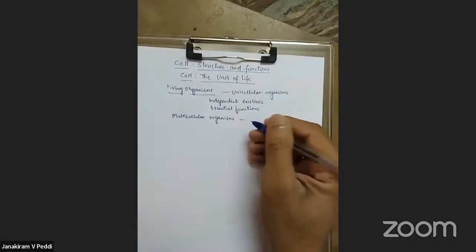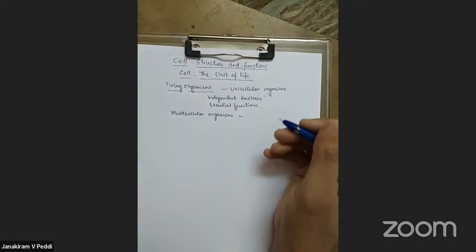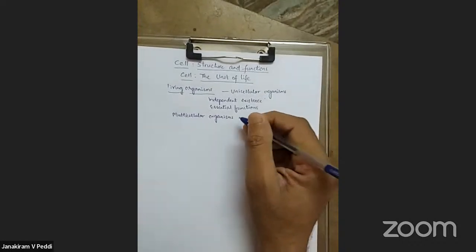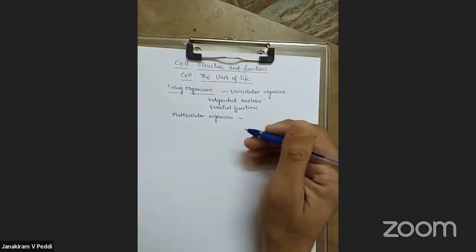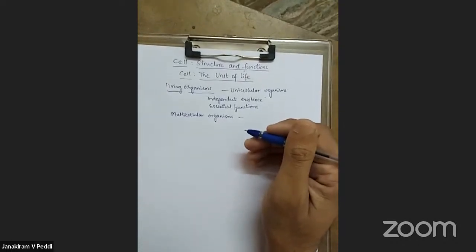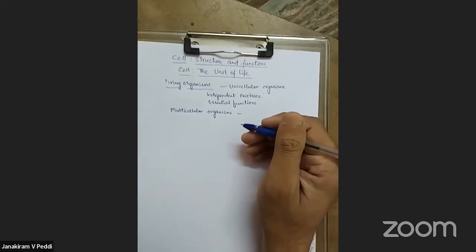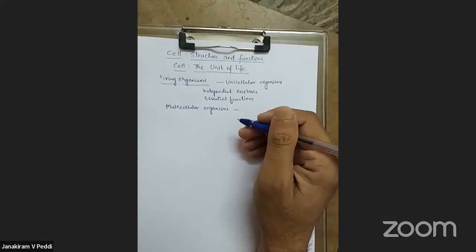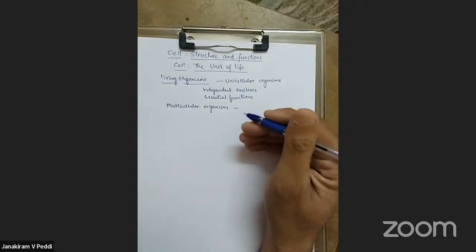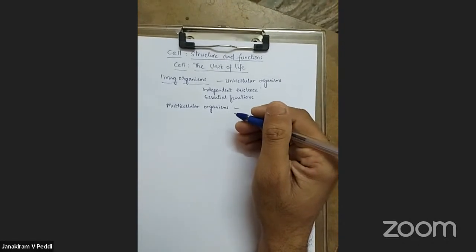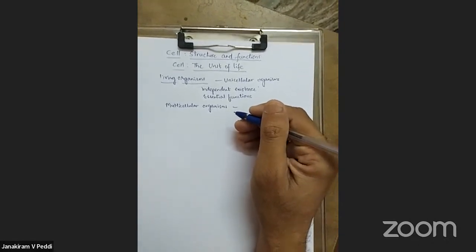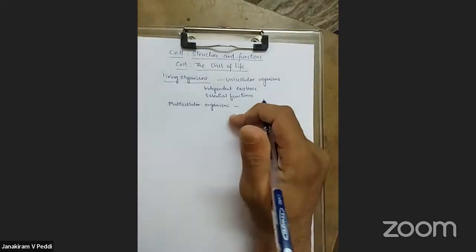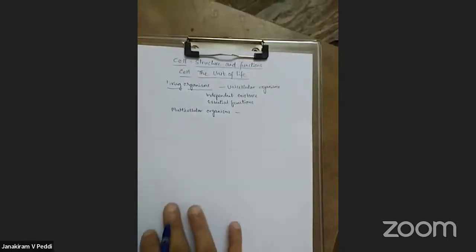In plants, cells present in the root perform absorption and transportation of water and minerals. Cells in the fruit help in storage of food materials, and cells in the leaf perform mainly photosynthesis. Depending upon their location, the function of cells differs in multicellular organisms.